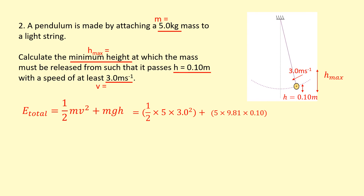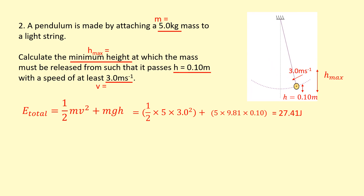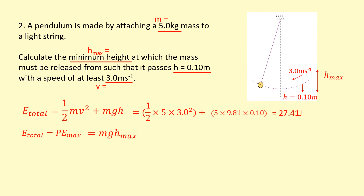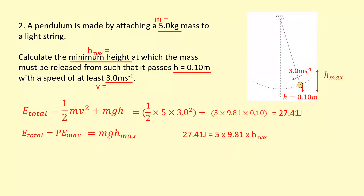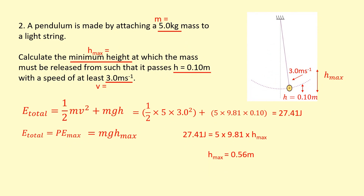The total energy needed in the system is 27.41 joules. At its maximum height (release point), all energy is gravitational potential energy, so: mgh_max = 27.41. Solving for h_max gives approximately 0.56 meters — the minimum height from which the pendulum must be released in order to pass through that point with the required speed.